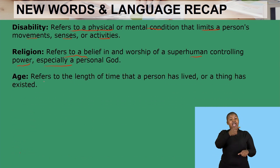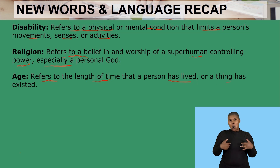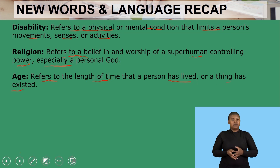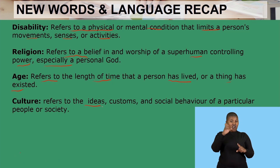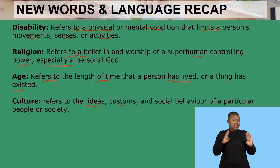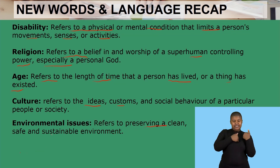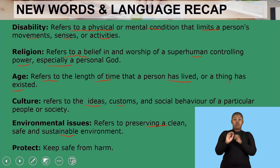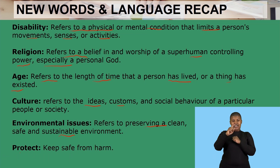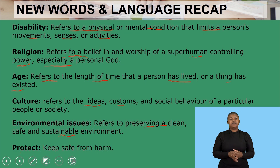Then age refers to the length of time that a person has lived or a thing has existed. Then culture refers to ideas, customs, and social behaviors of a particular people or society. Then environmental issues refers to preserving a clean, safe, and sustainable environment. And protect means keeping safe from harm. That was your new words and language for this lesson.